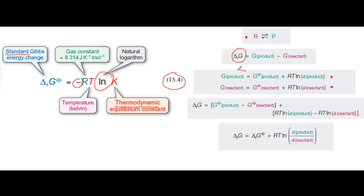And now we can substitute this expression for G product and G reactant into the expression that we've already written for delta G. That gives us this expression here. And then if you simplify and gather the terms together, you will reduce that to this expression here.